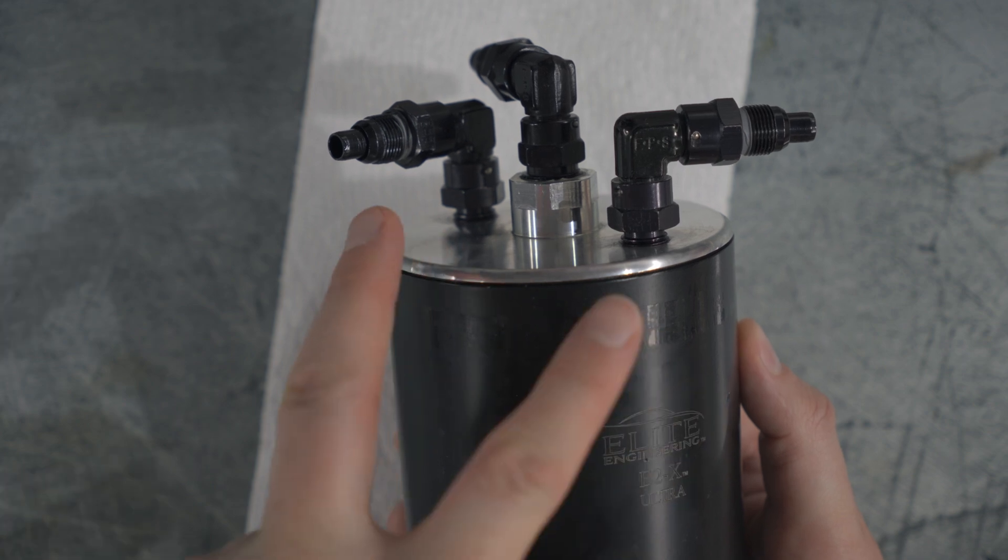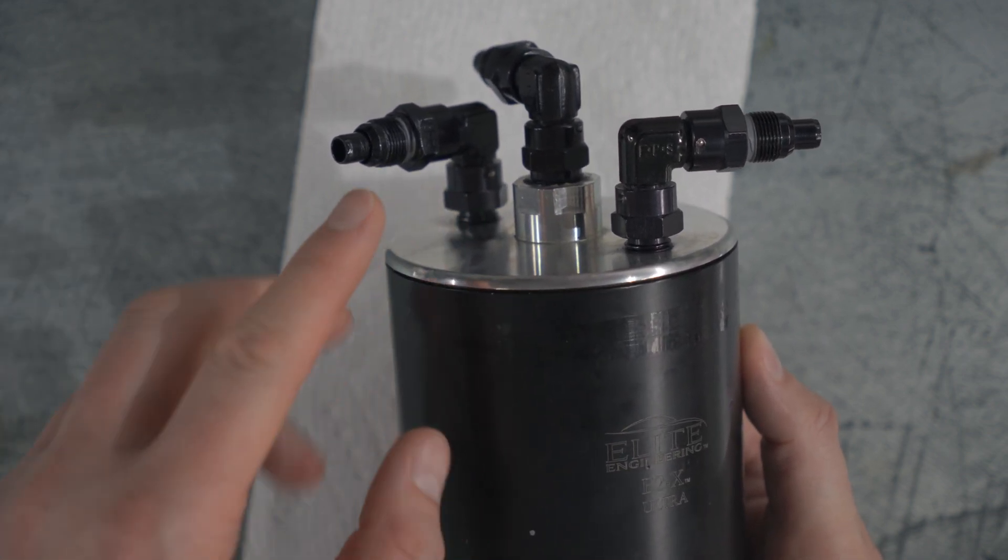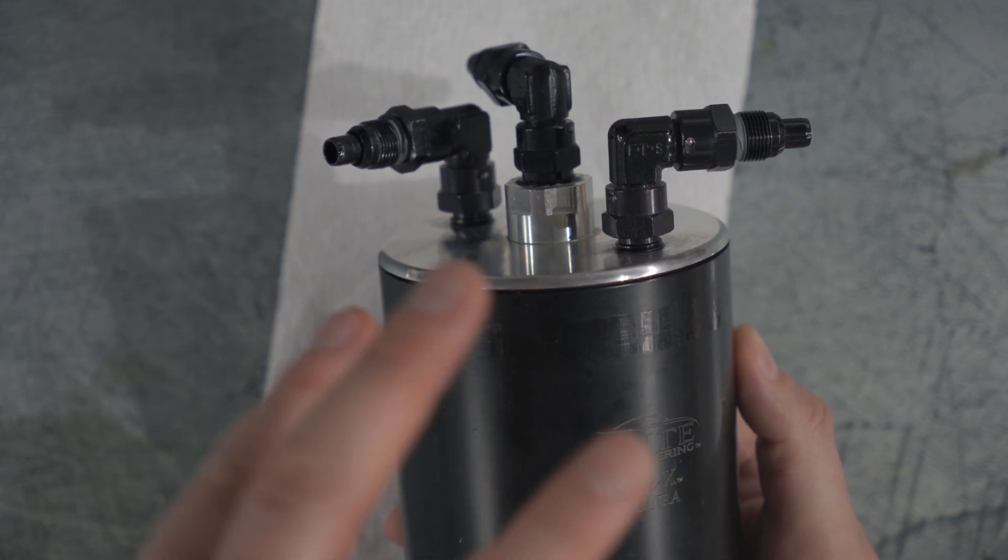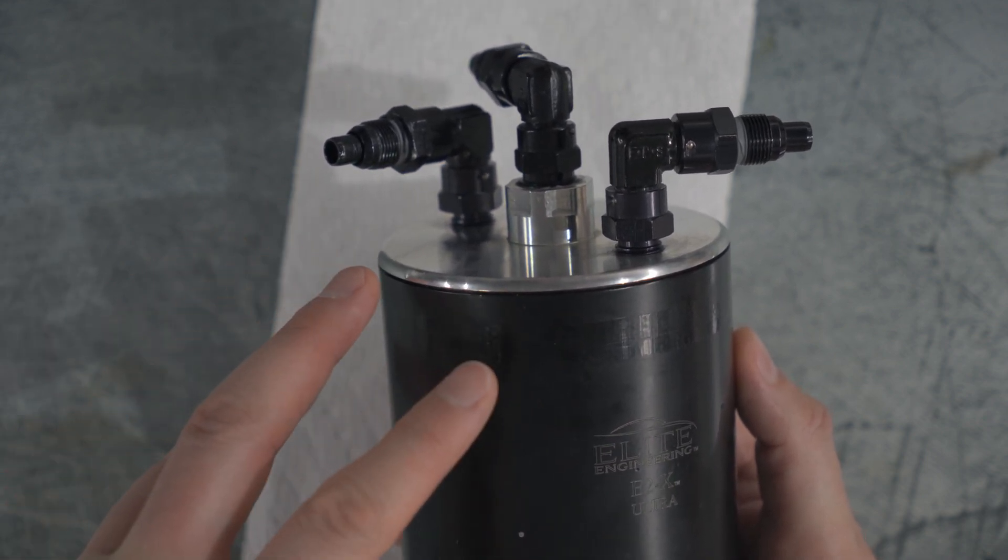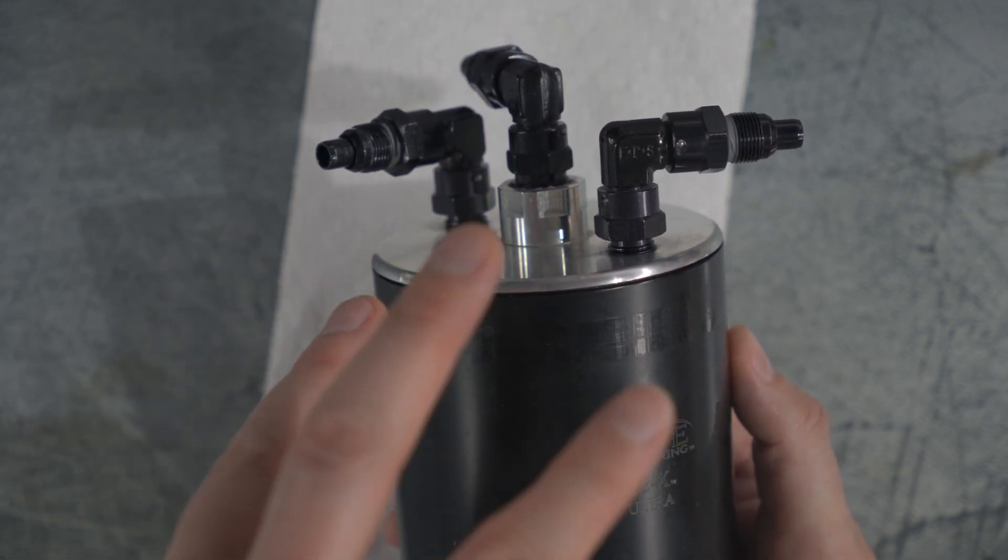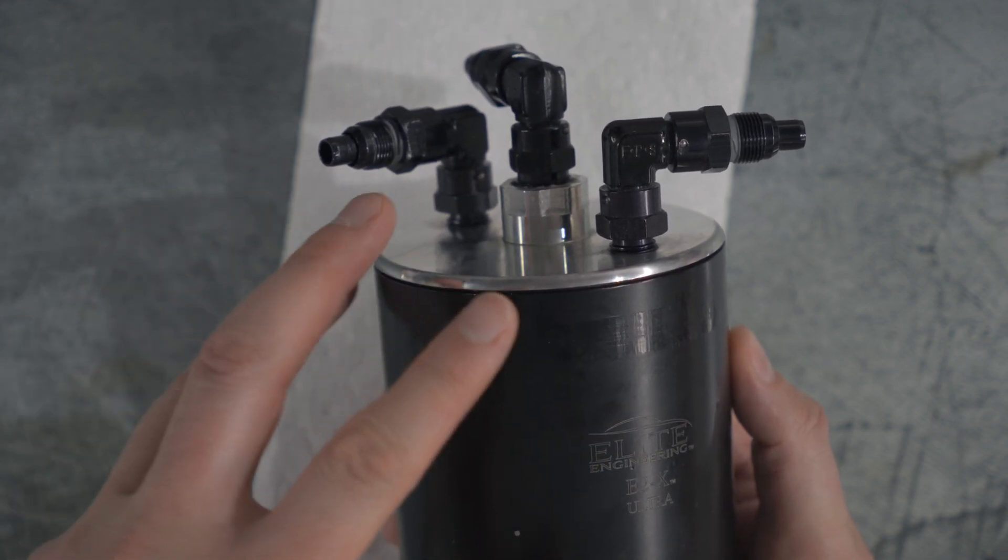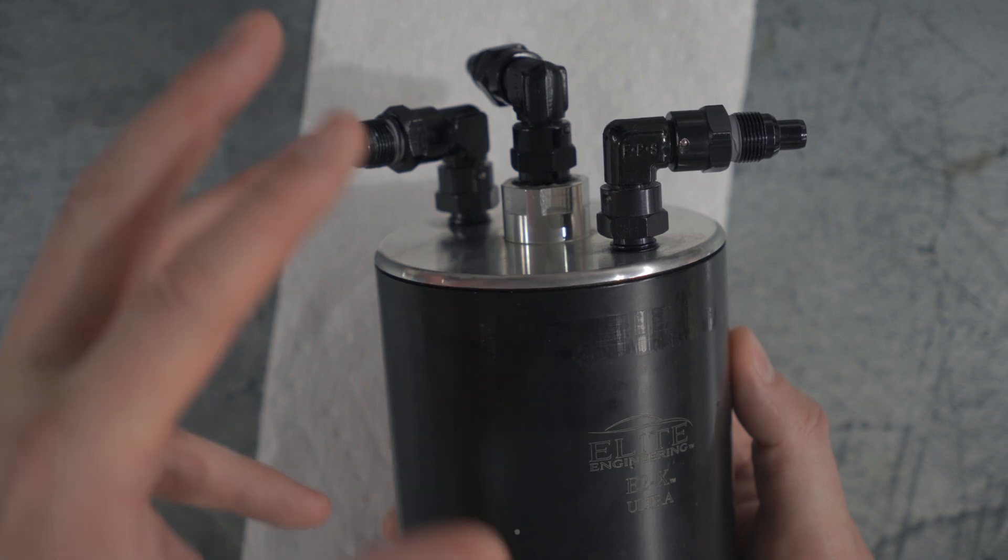Advantages of running the dual exit over the single exit catch can is that you can maintain your proper crankcase evac. You can avoid pressure buildup in the crankcase and actually still stay compliant with emissions and often with some tracks, some of the rules where you cannot have an open breather element catch can.